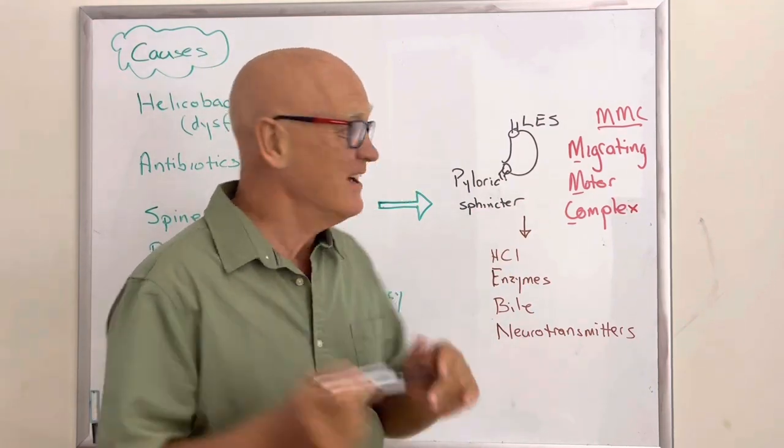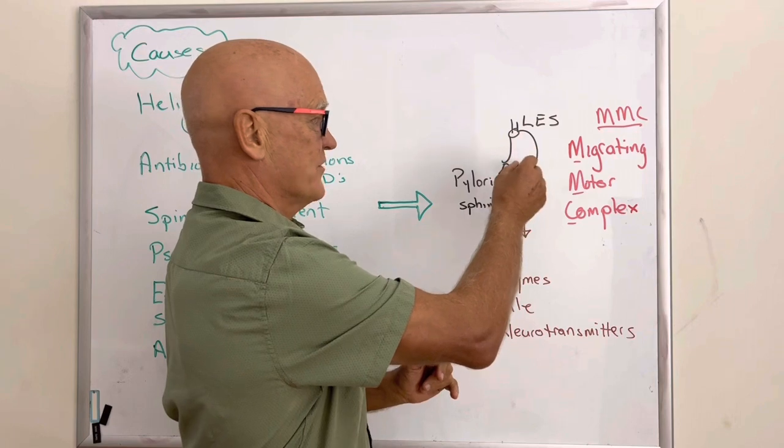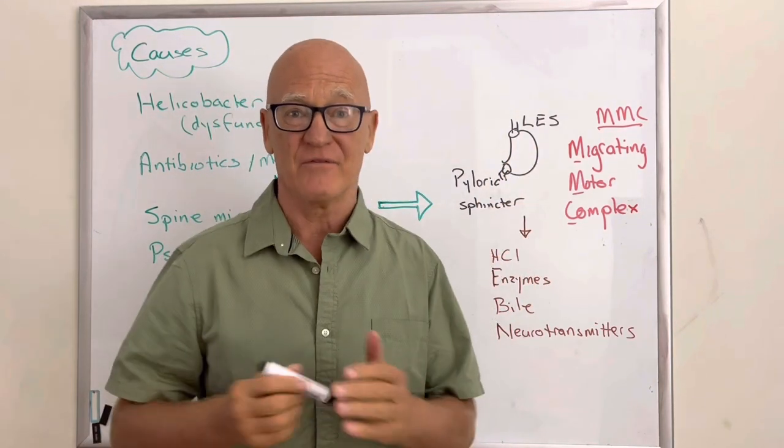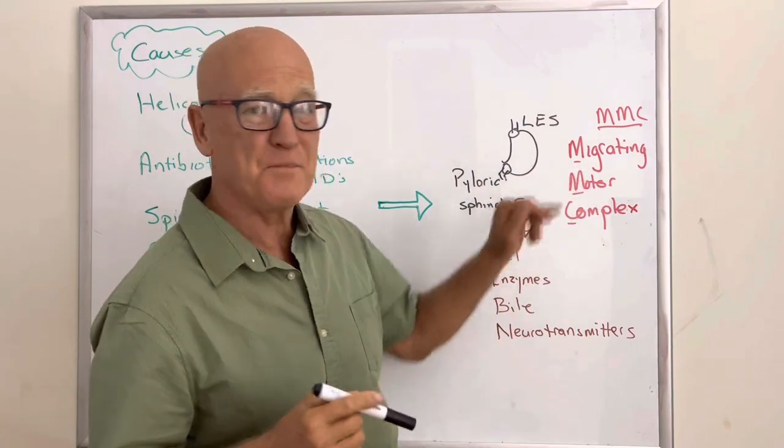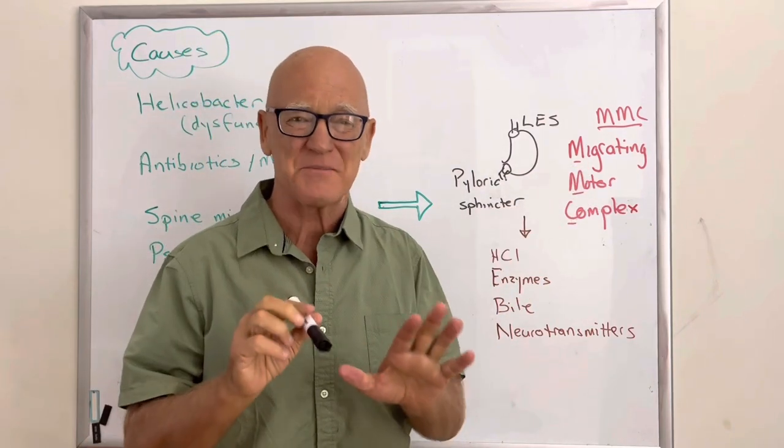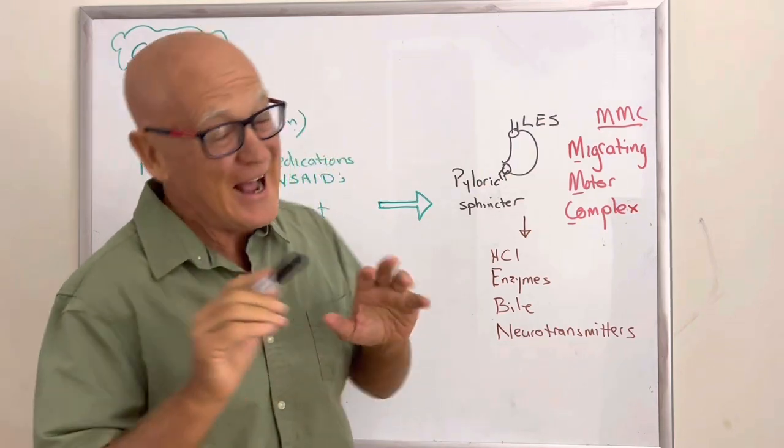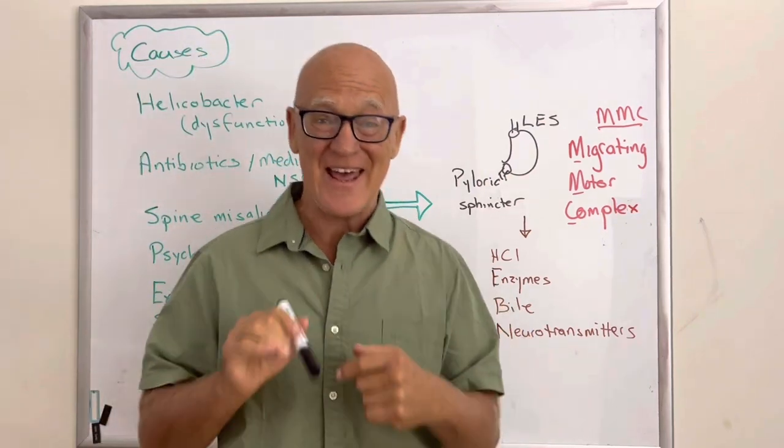Secondly, you want to make sure it closes off so that nothing else goes up because you actually can have bile reflux. So we need to make sure these sphincters are moving. There's one other aspect that is critical from the physical component and that is what's called the MMC, the migrating motor complex. It's the movement through the digestive system.